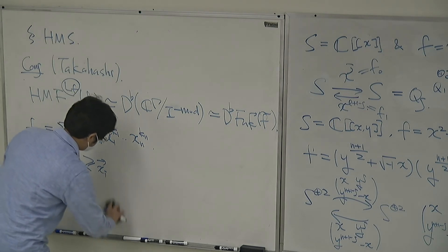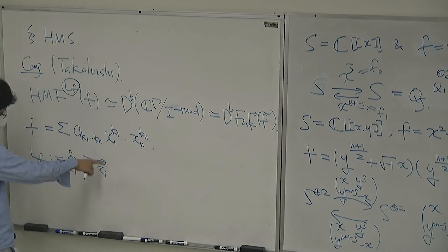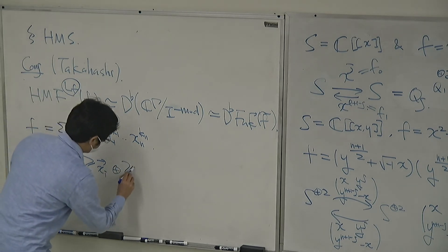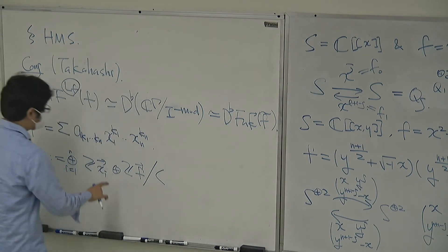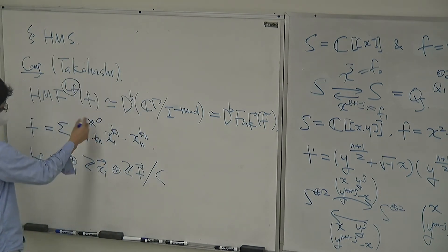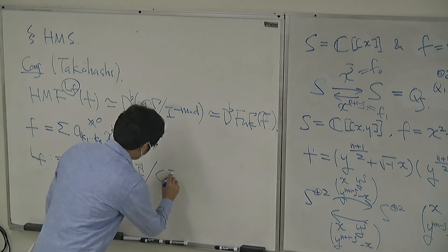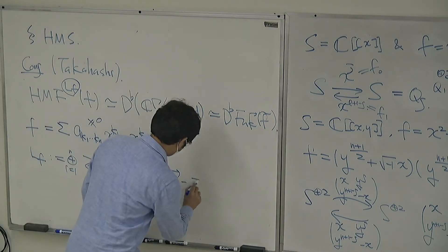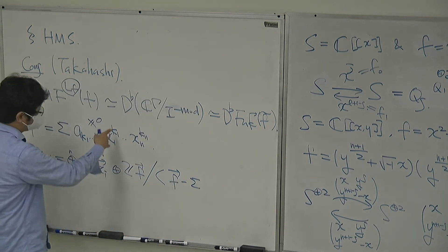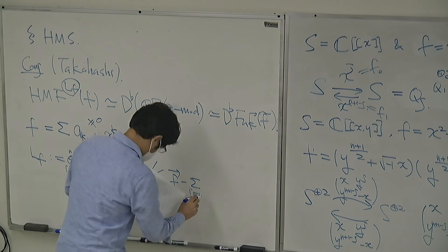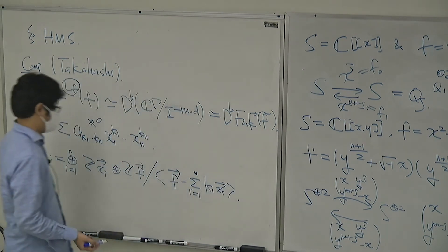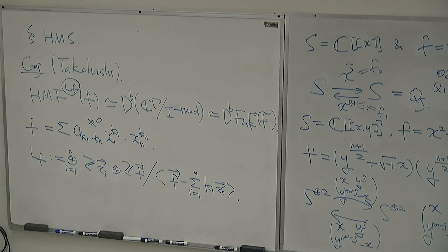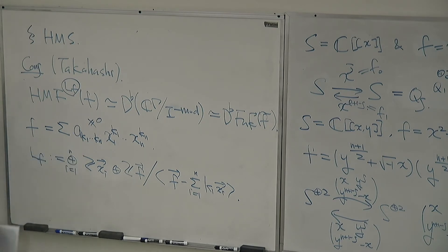LF is a grading group. Let F be an invertible polynomial written as a sum of monomials with exponents K_{i,j}. The group LF is a free abelian group generated by formal symbols X_i, modulo relations: for each monomial in F, K_{i,j} · X_i equals a fixed generator. When F is an invertible polynomial, this is a rank-one abelian group.